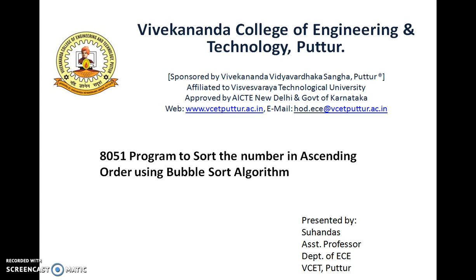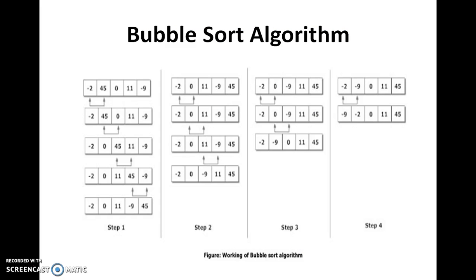Before starting with the program, we will check how exactly the algorithm works. We will consider 5 numbers: minus 2, 45, 0, 11, and minus 9. The intention is to sort these given numbers in ascending order.